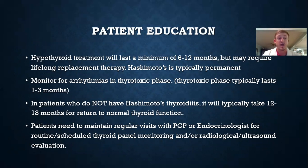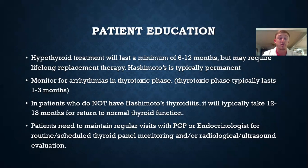Important patient education includes that hypothyroid treatment will take at least 6 to 12 months and can be lifelong in the case of Hashimoto's. In the thyrotoxic phase, patients need to monitor for arrhythmias and other heart-related complications. Patients without Hashimoto's may return to full thyroid function, though it will take at least 12 to 18 months. All patients need regular visits with their primary care provider and/or endocrinologist for routine thyroid panels and radiological studies. Genetic testing may also be done for patients with a family history of thyroid disease.